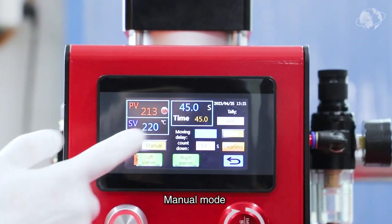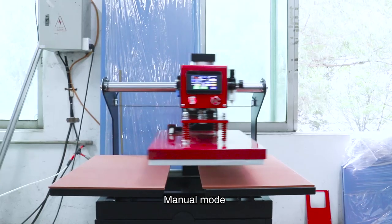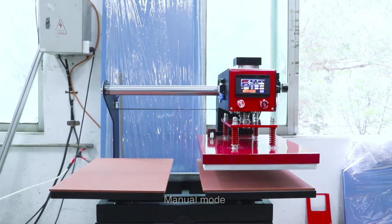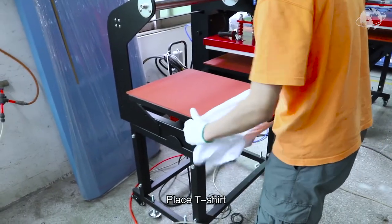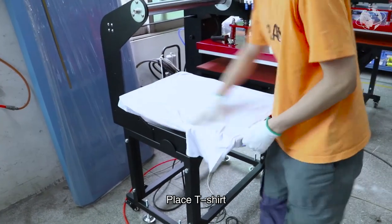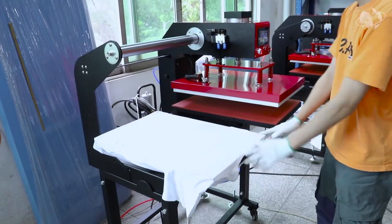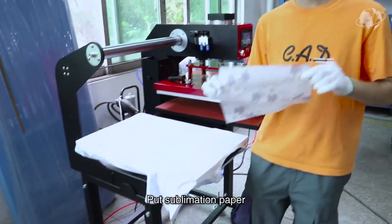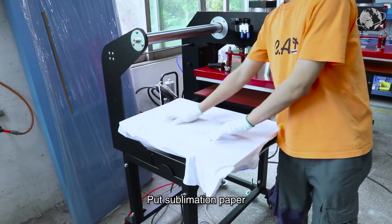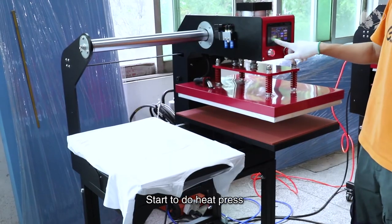For manual mode operation: place the t-shirt, position the sublimation paper, and start the heat press.